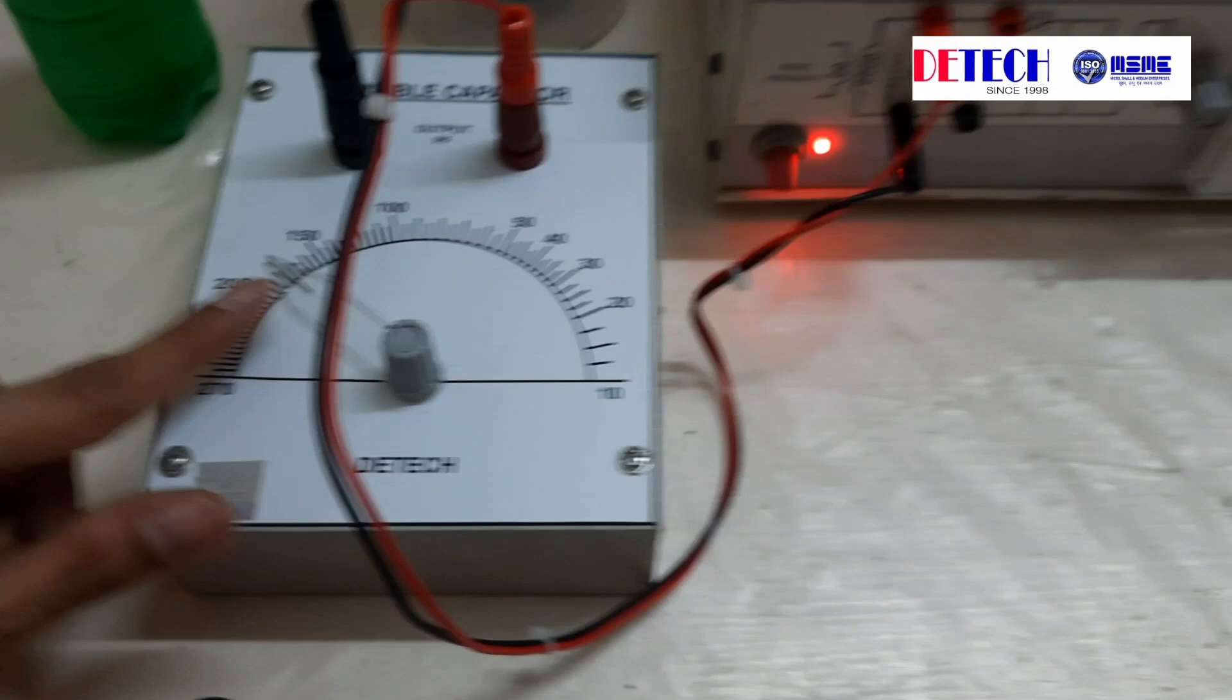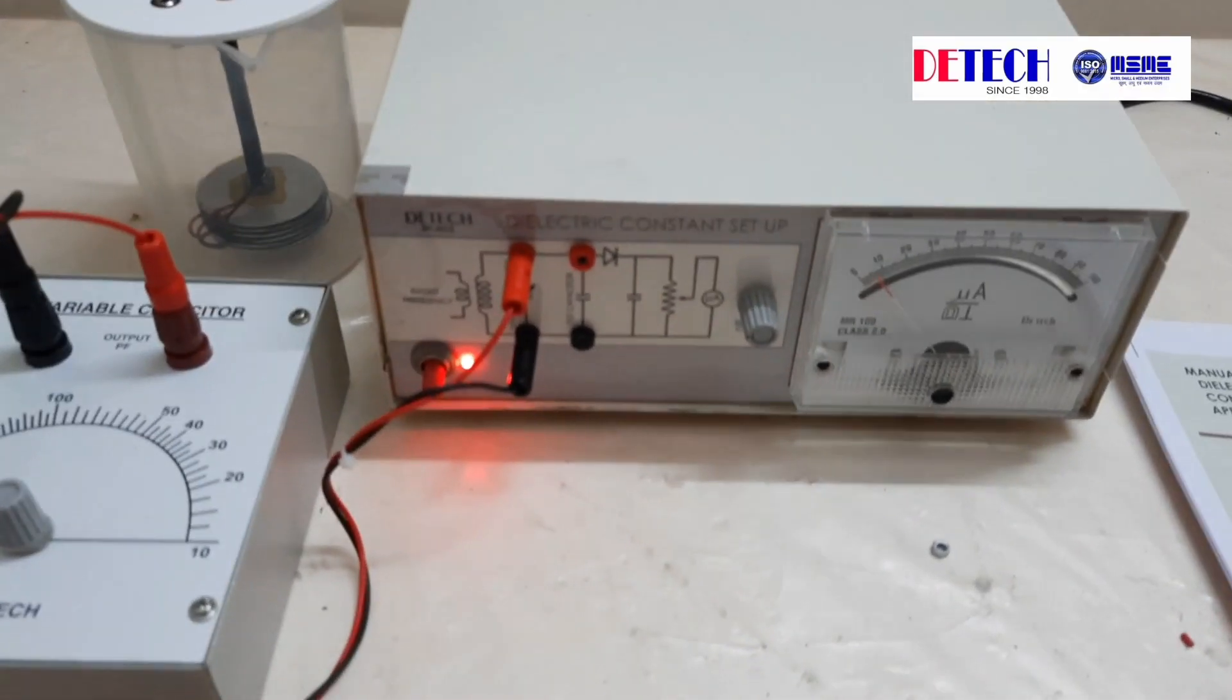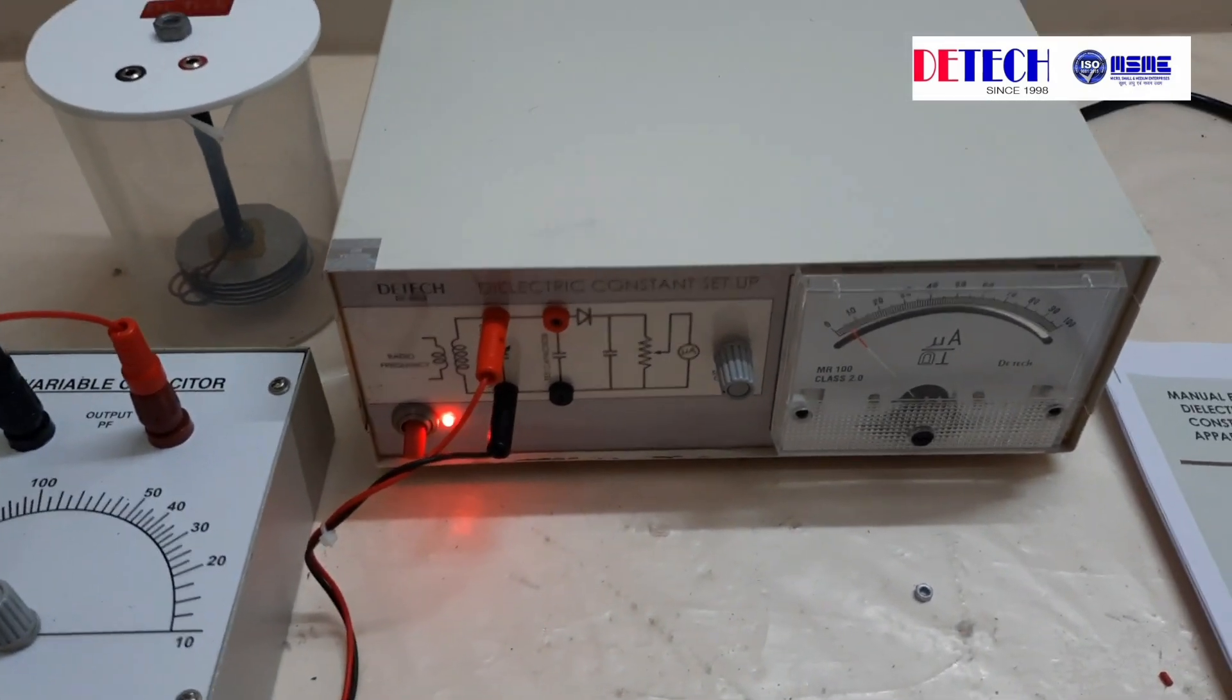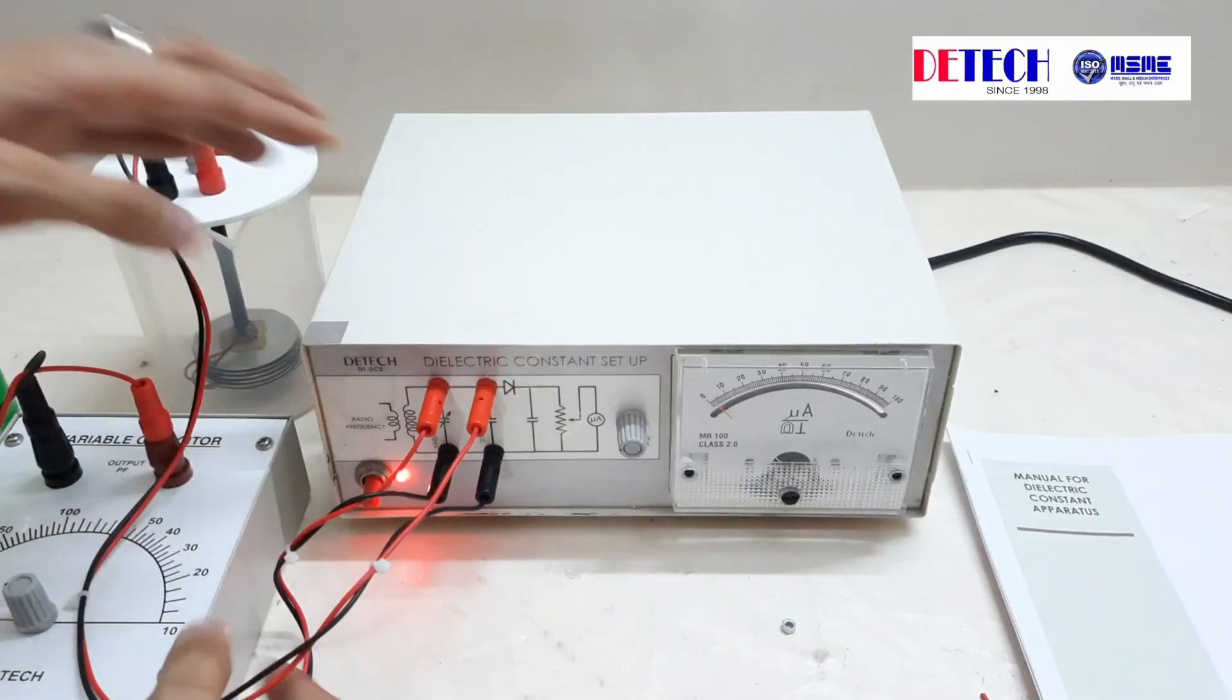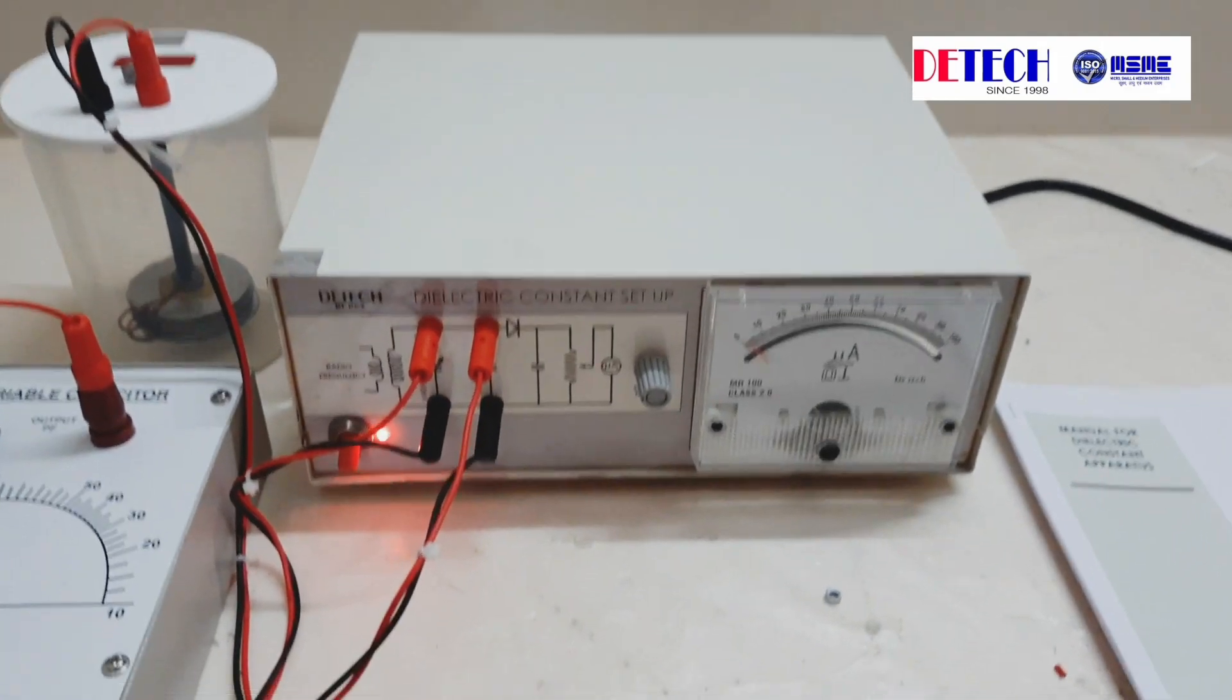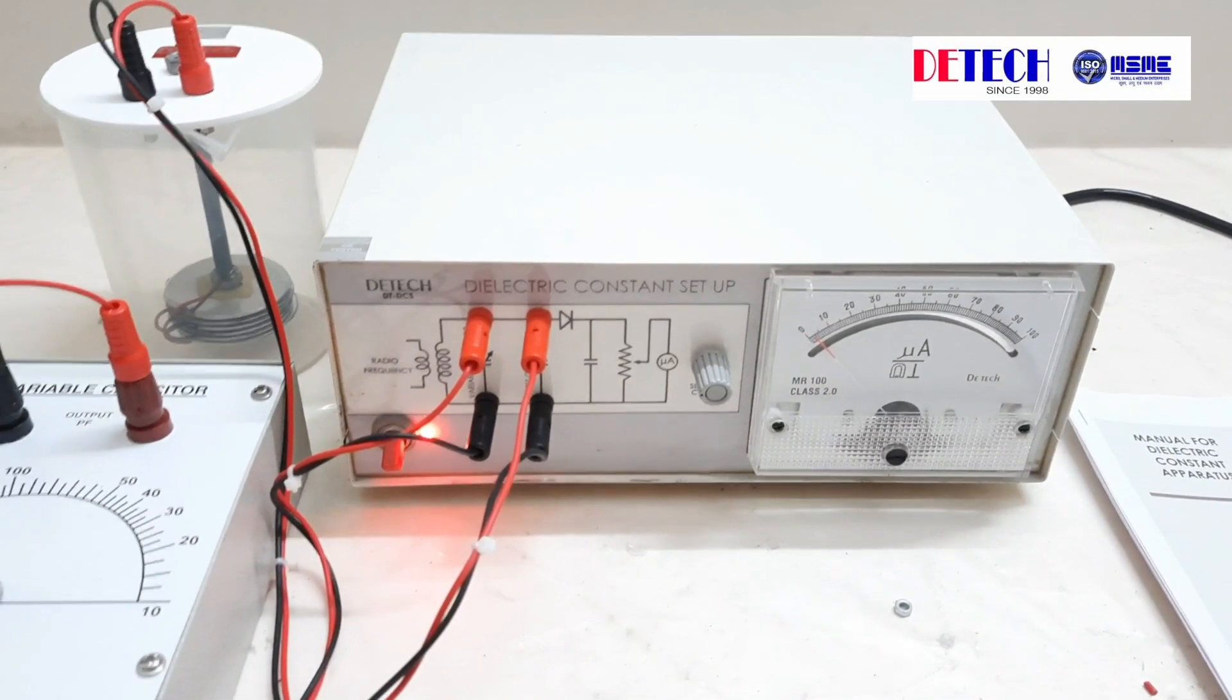We again change it and keep it at 270. Now let us connect the test capacitor. So the previous value that we obtained without the test capacitor was our value C1. Now C2 is the value with liquid dielectric in it.